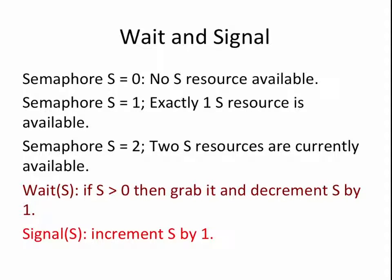Analogous to the wait(S) command, we have a signal(S) command. A signal of semaphore S indicates that one additional S resource has become available. The signal(S) command increments the value of S by 1. The result of this is that a process that is waiting on S will now be able to grab it and proceed with the next line of code.